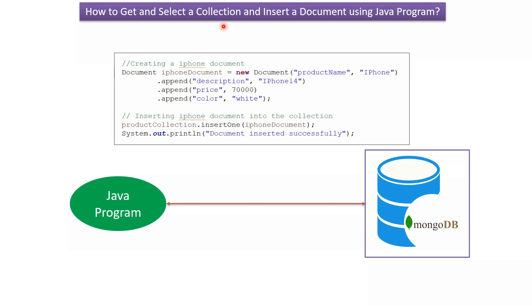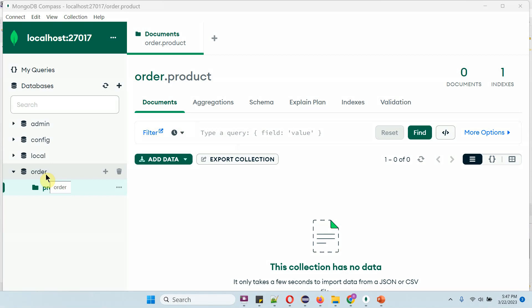In this video tutorial, I will explain how to get and select a collection and insert a document in the same collection using a Java program. Here you can see the order database — it has a product collection, and the product collection does not have any data.